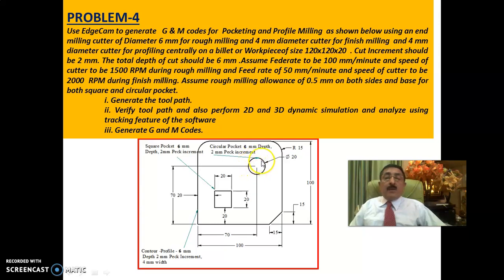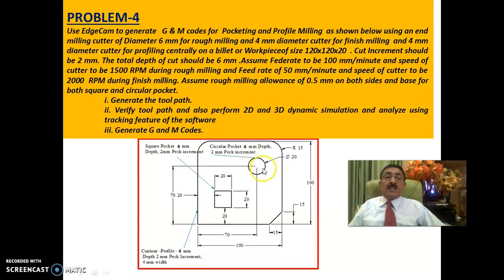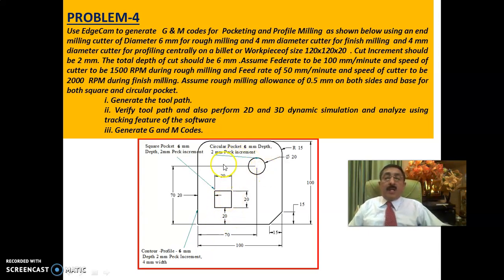After rough milling, the depth will be 5.5mm and the pocket will be 19mm on each side; that 0.5mm is retained for finishing. Once the finish pass is done, 19mm becomes 20mm and 5.5mm becomes 6mm depth. The same applies to the circular pocket: after rough milling diameter is 19mm and depth is 5.5mm, becoming 20mm and 6mm after finishing.